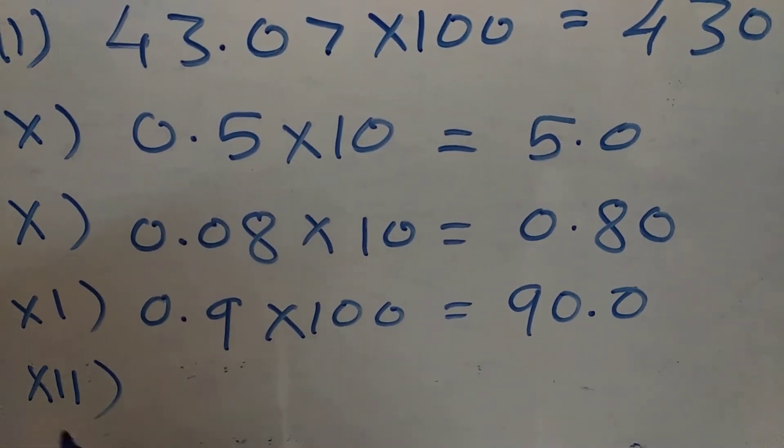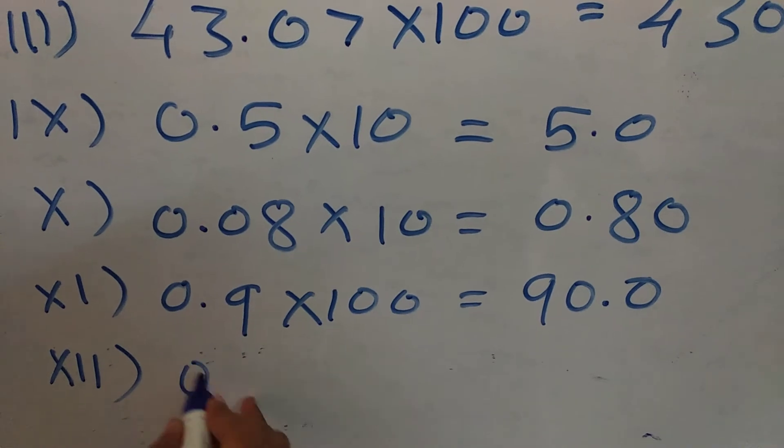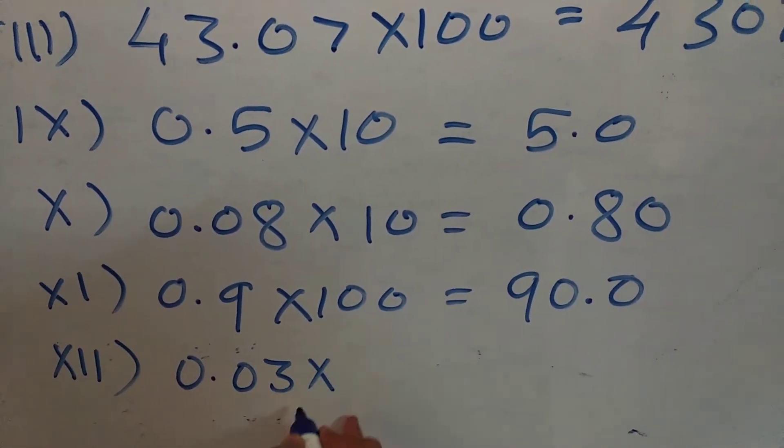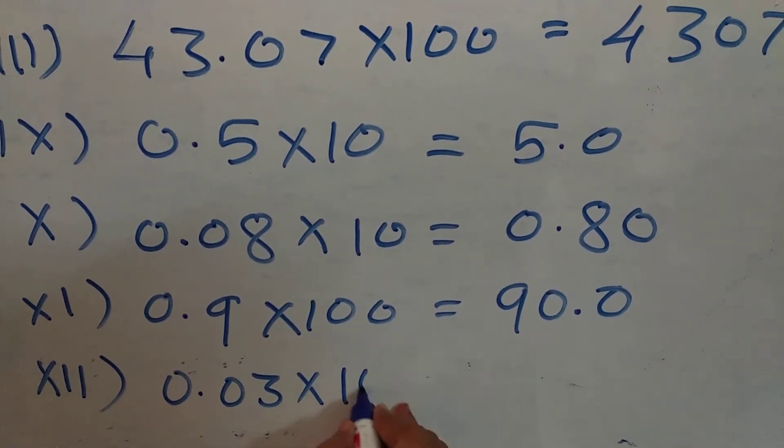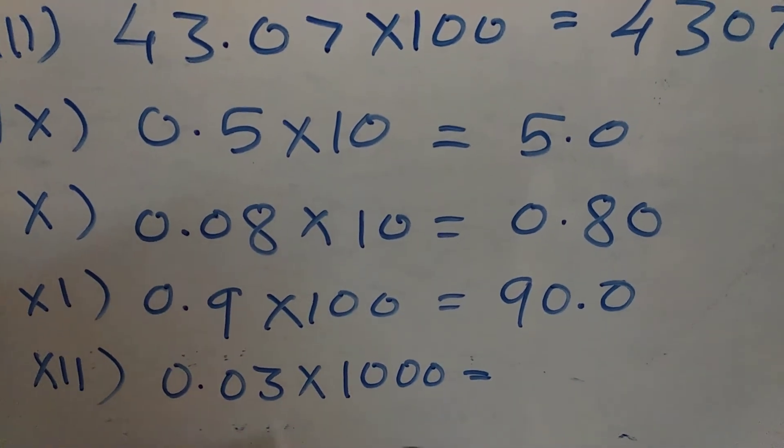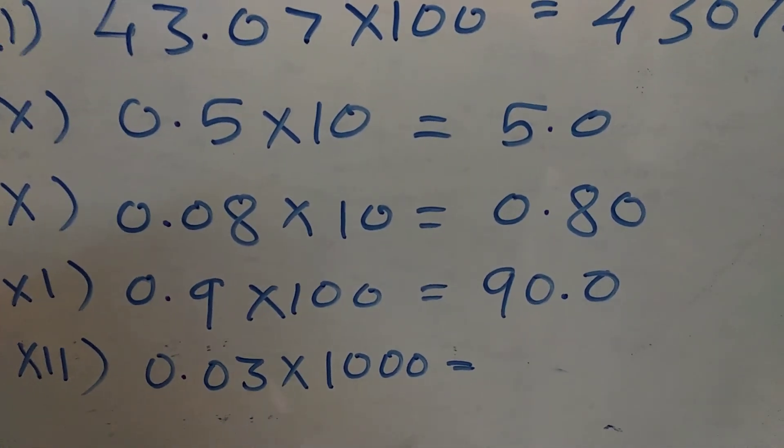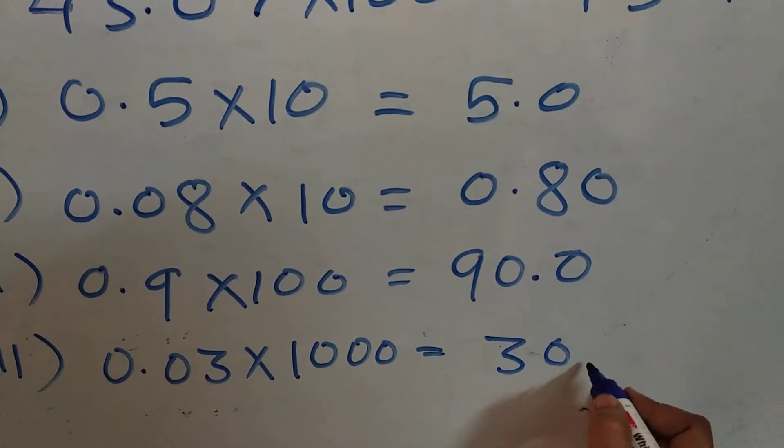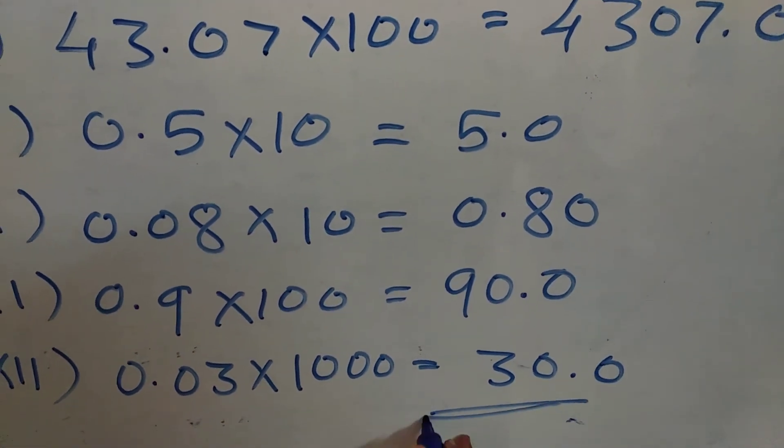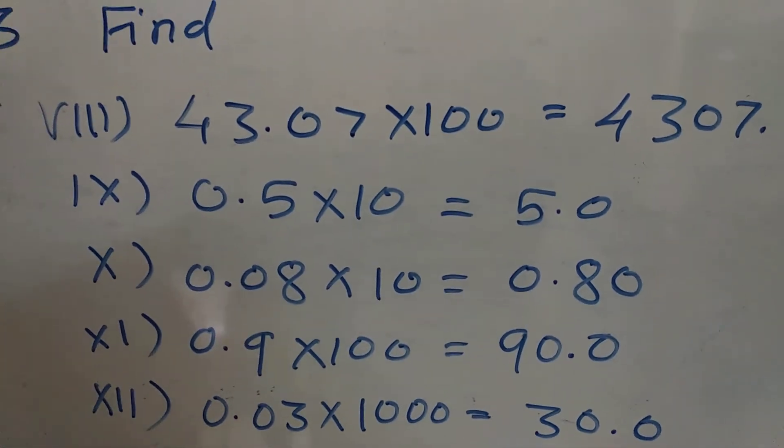Now, last one, it is twelfth one. 0.03 multiplied here multiplied by 1000. Means, 3 digits you have to shift this side. So, it is coming 30.0. In this way, we have solved question number third.